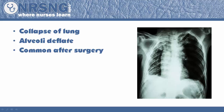So what is atelectasis? Atelectasis is a collapse of the lung. If you view here on this x-ray, the right lung here you can see is much smaller than the left lung. So this would be the area of atelectasis right here where you can see all this white space.